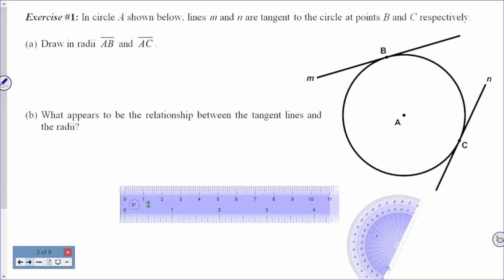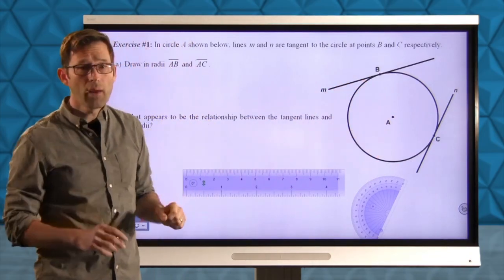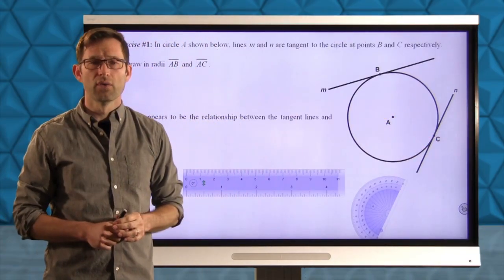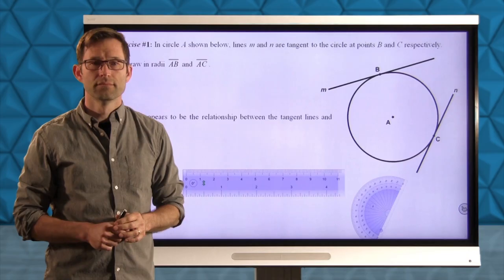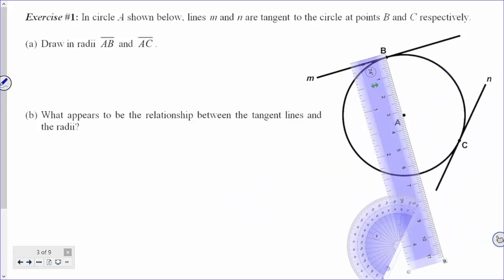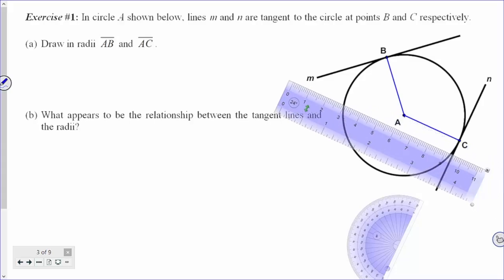Let's take a look at exercise number one. In circle A shown below, lines M and N are tangent to the circle at points B and C respectively. Draw in radii AB and AC. So we've got these two tangents, line M, line N. They're tangent at point B and point C down there. And all I want you to do is take your ruler, straight edge, whatever, and draw in radii AB and AC. Take a moment, pause the video, and do that.